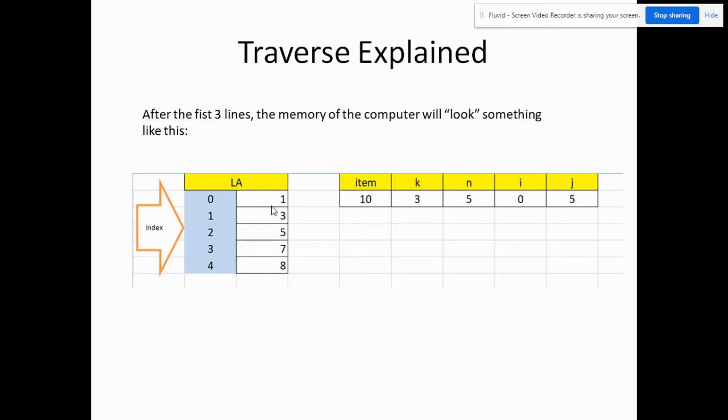After the first three lines, the memory of the computer will look something like this. These are the variables. First, we have here the array, and these are the values of the array: 1, 3, 5, 7, and 8. The index of this value 1 is actually zero. For 3, it's 1 and so on and so forth. These are the indices. As we have said a while ago, the index of an array will start with zero.